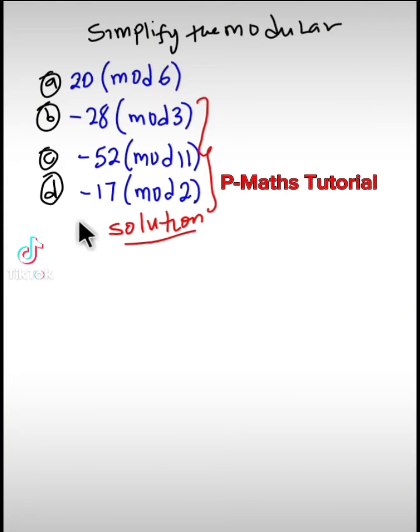To get the modulo of 20, divide 20 by 6 and pick out your remainder. That is the modulo of 20. So to solve 20 mod 6,